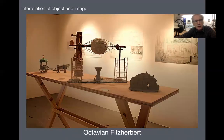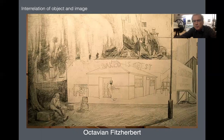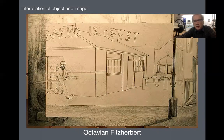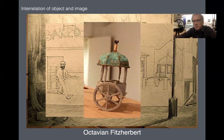Sean Brennan and Octavian Fitzherbert are working with object making and drawing. Octavian has a whole lot of devices — windmills — and is interested in the environment and sustainability, creating these little fictitious machines. He has a drawing depicting the college director coming out of a little building where he's about to sell tarts he's made to raise money for the college. Octavian has objects and drawings that interrelate — it's difficult to know which came first, the drawing or the sculpture. It's a reflexive action between the two, taking his ideas from two to three dimensions and back.